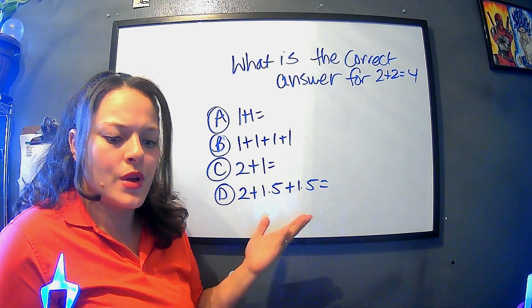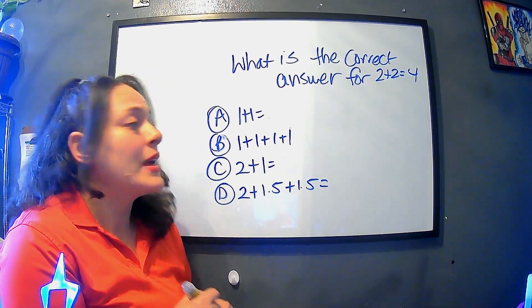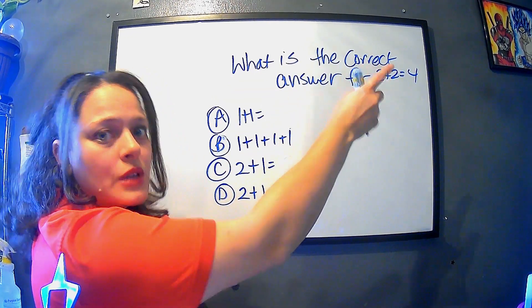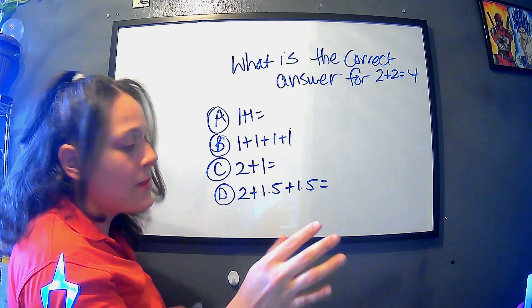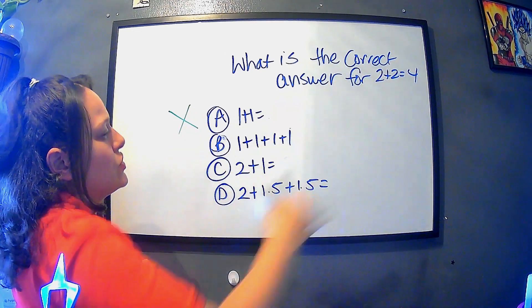This is a classic example of where we could do process of elimination. So in this case, we have what is the correct answer for 2 plus 2 equals 4. So now we have the definite one that we know for sure that should not be here is this one, because 1 plus 1 has nothing to do with 4.